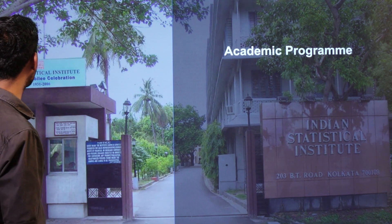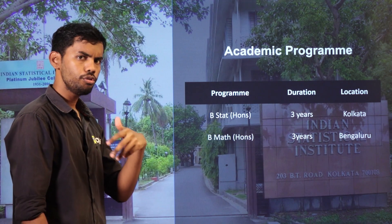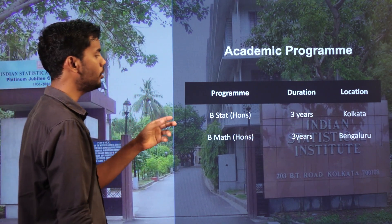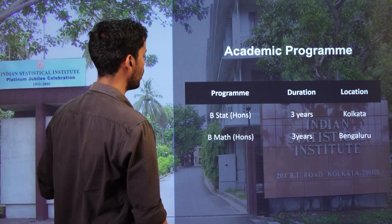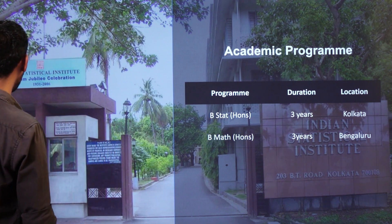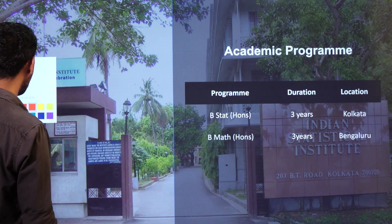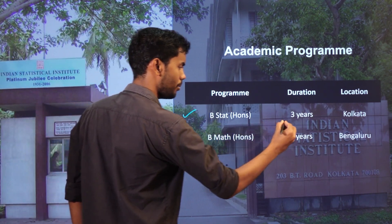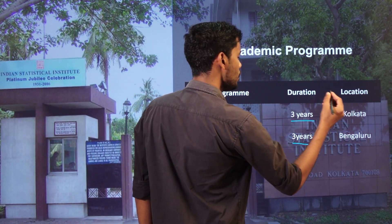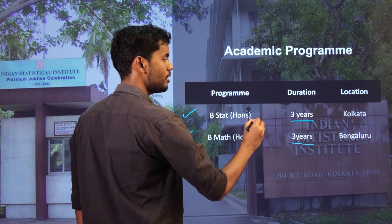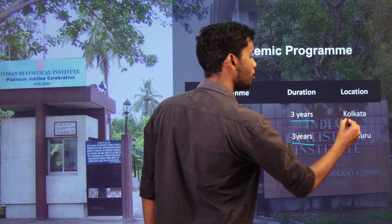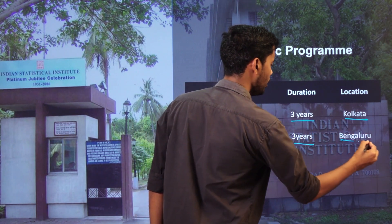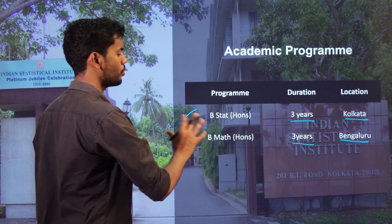There are 2 UG courses available. The first is Bachelor of Statistics and the second is Bachelor of Mathematics. Both are 3-year programs. Bachelor of Statistics is available at the Indian Statistical Institute, and Bengaluru also has an Indian Statistical Institute campus.